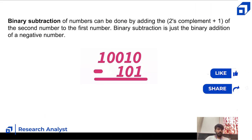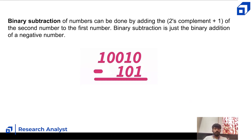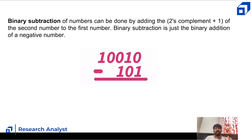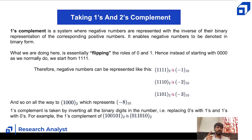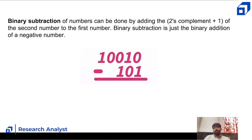Binary subtraction of numbers can be done by adding the two's complement of the second number to the first number. So binary subtraction is essentially binary addition of a negative number. Before looking into it, you need to know two things: one's complement and two's complement.